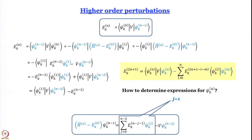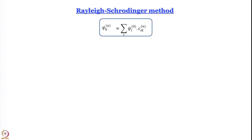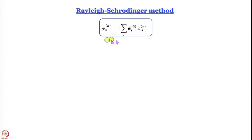There are two ways of doing it. One is by using a variational method — we skip that for the time being because we have not yet discussed the variation theorem; we will do that later. For now, what we do is briefly discuss what is called the Rayleigh-Schrödinger method. The Rayleigh-Schrödinger method starts from the expression: ψ_k^n equals the sum over i of ψ_i^0 times c_{ik}^n. This coefficient c_{ik}^n represents the contribution of the ith unperturbed wave function in the nth-order correction of the kth wave function.